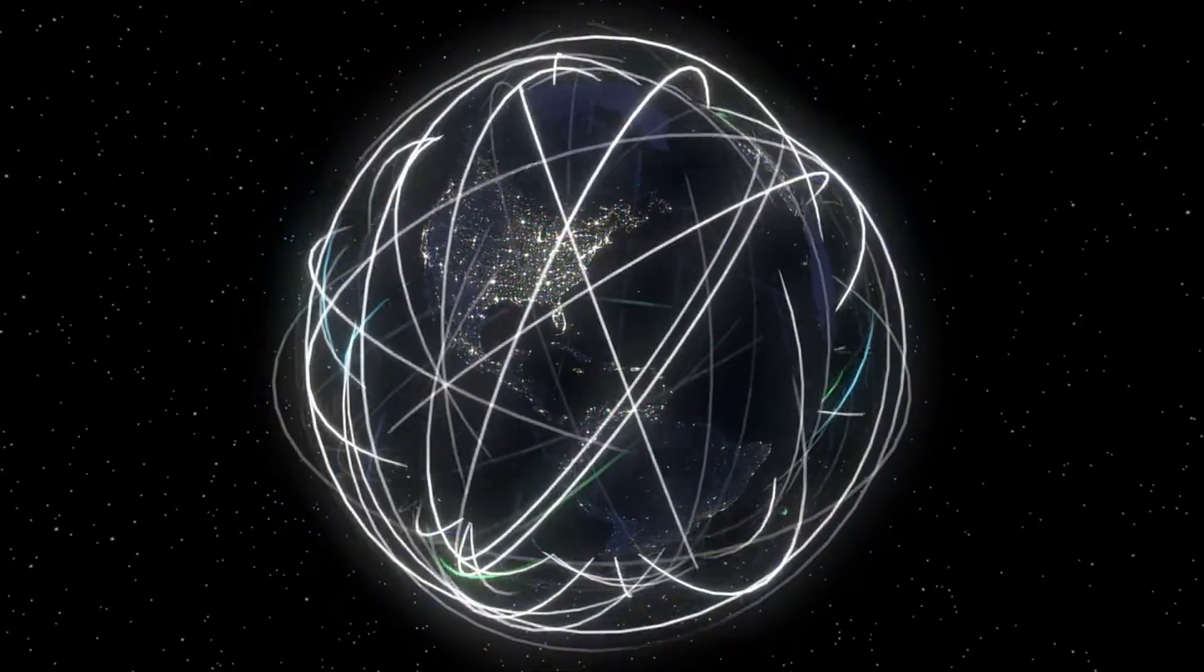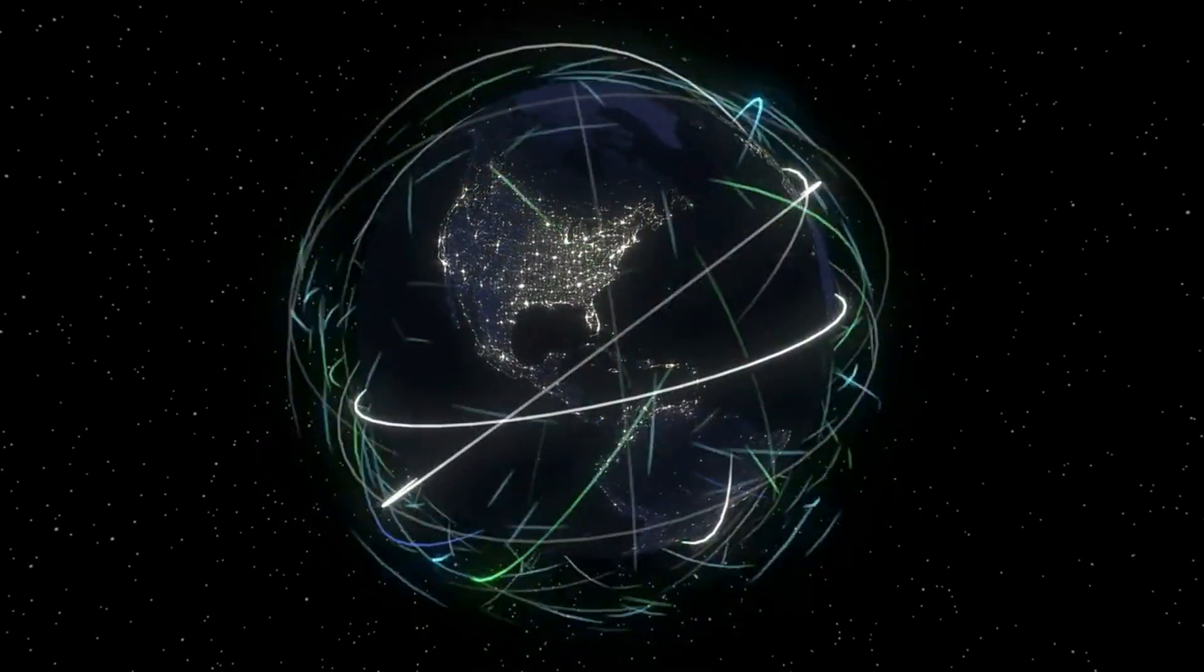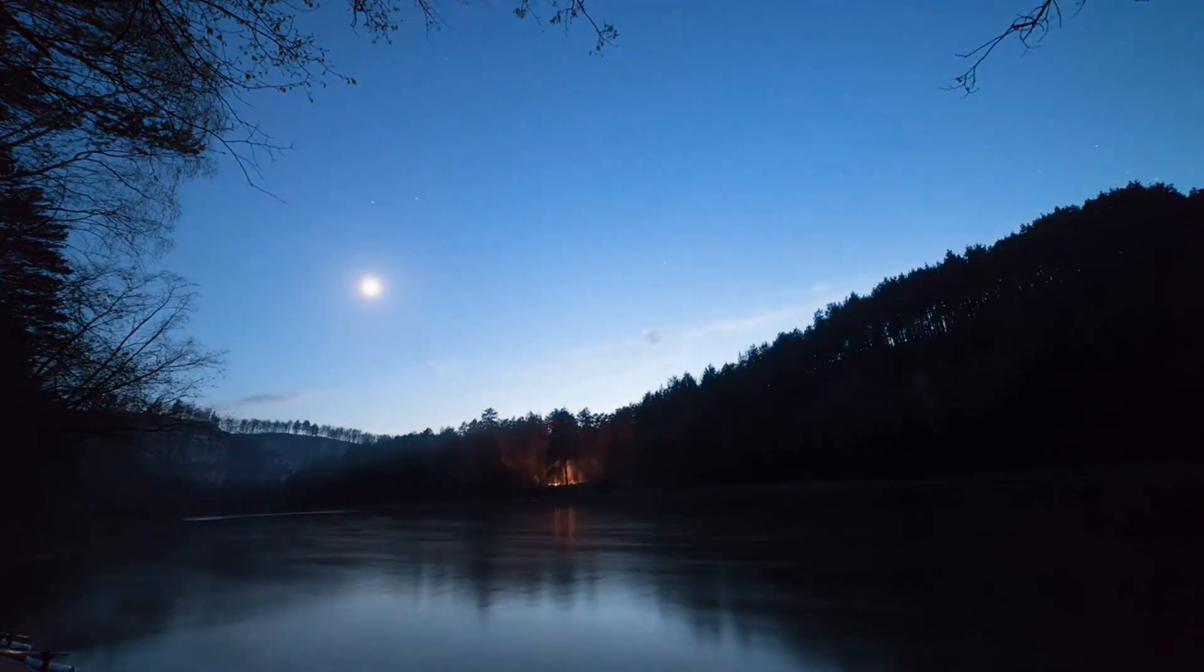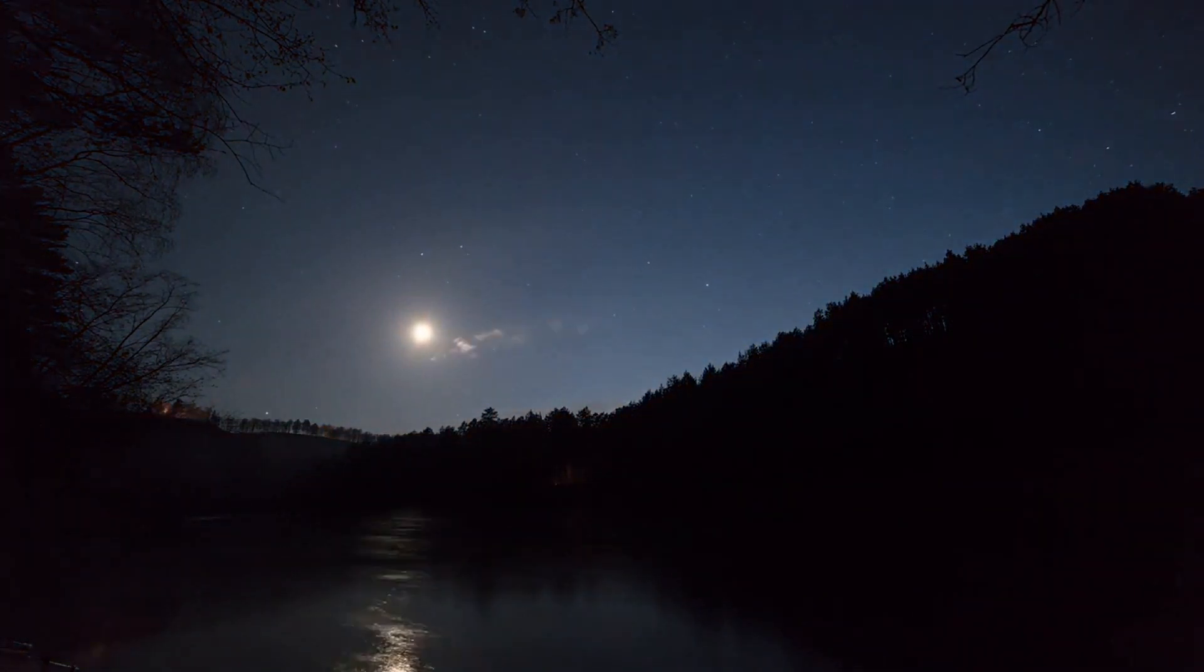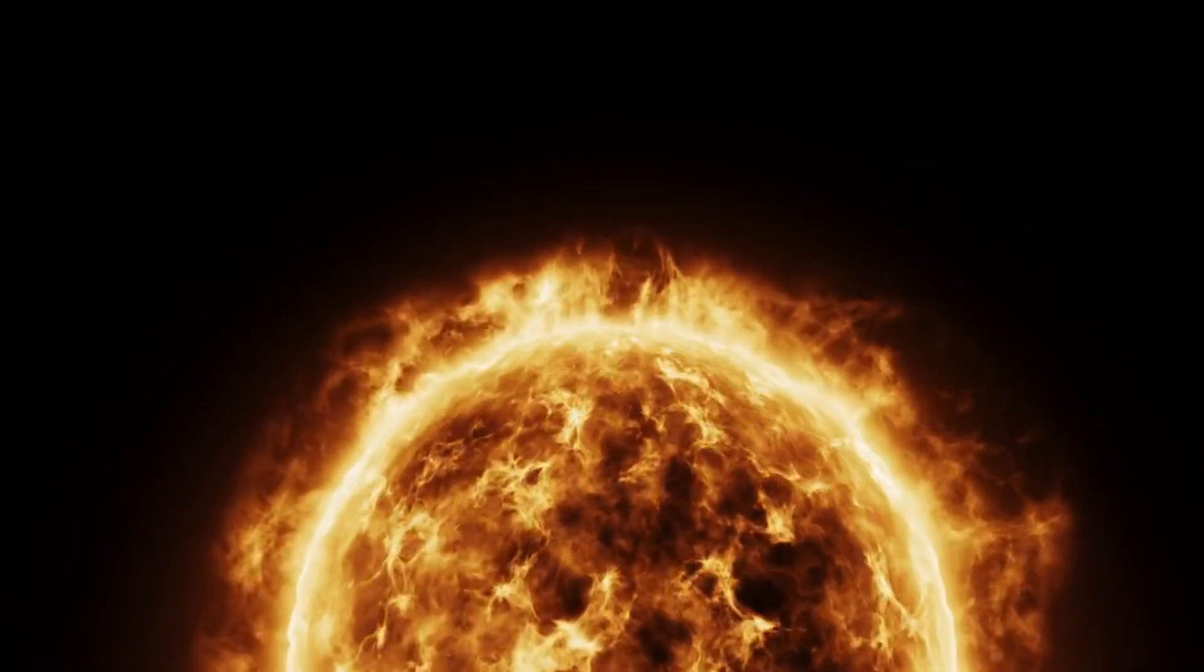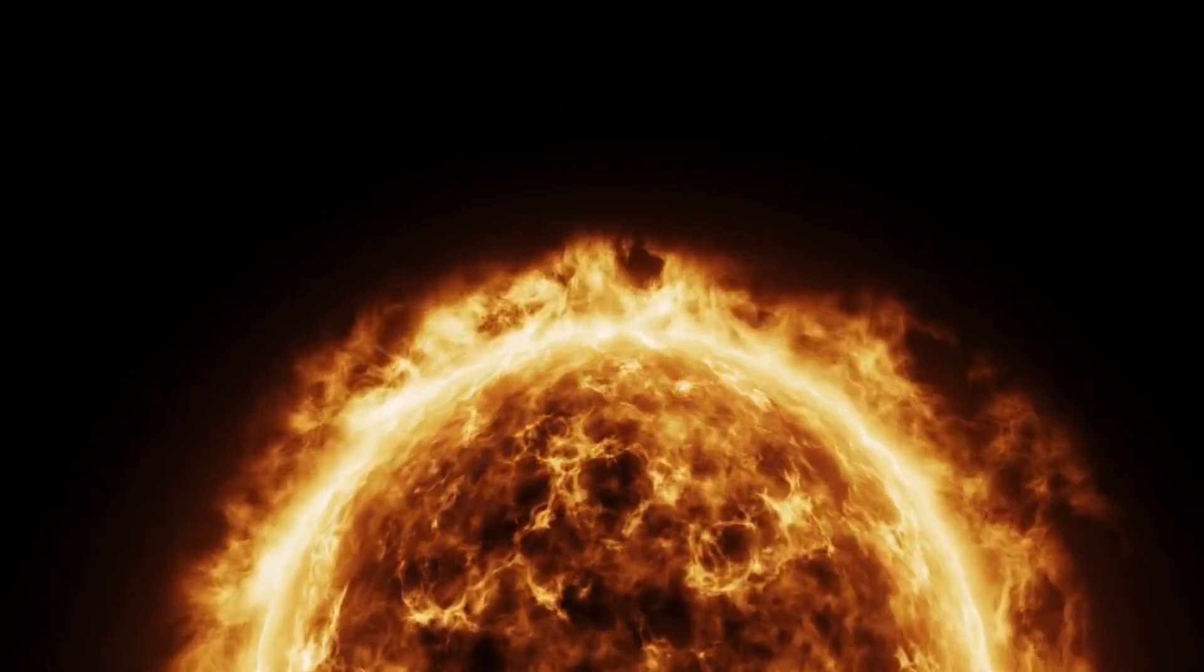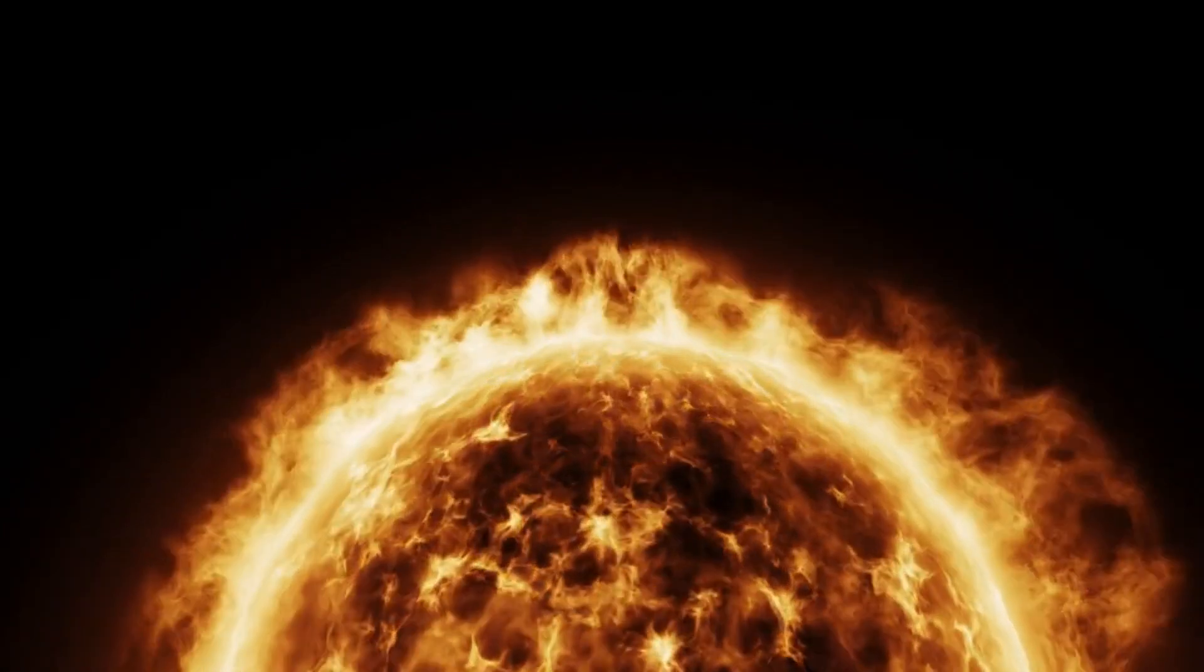The sun's magnetic field is not constant. It changes over time. The changes in the magnetic field are related to the solar cycle, which lasts approximately 11 years. During the solar cycle, the number of sunspots on the sun's surface increases and decreases.